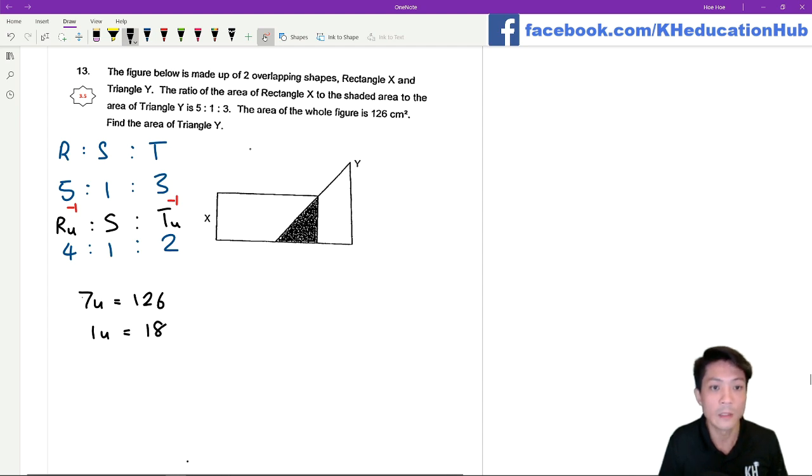They want you to find the area of triangle Y. The area of triangle Y is basically 3 units, which equals 54 square cm.